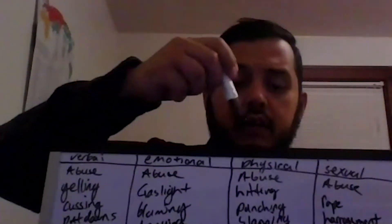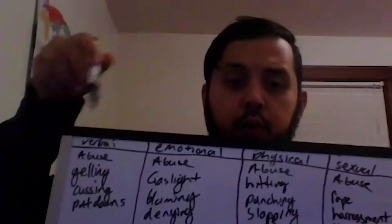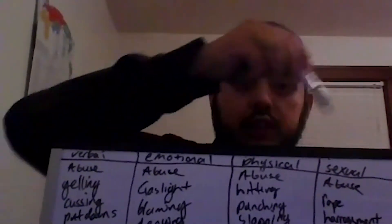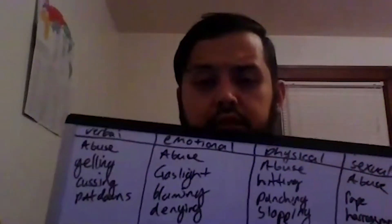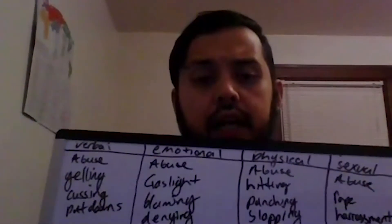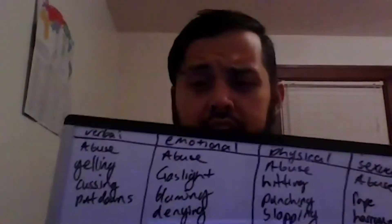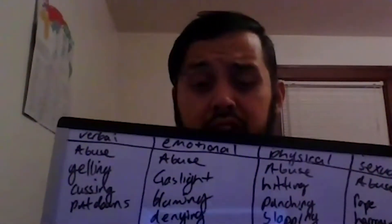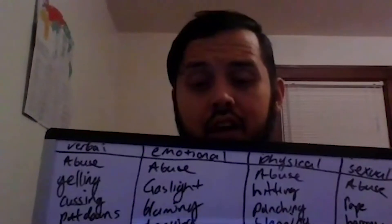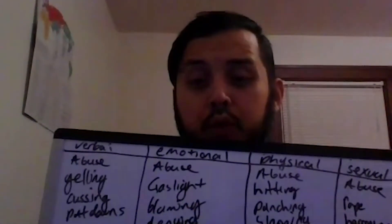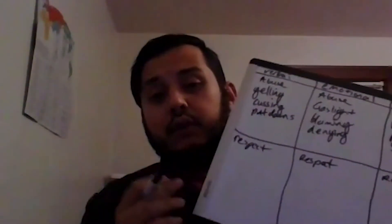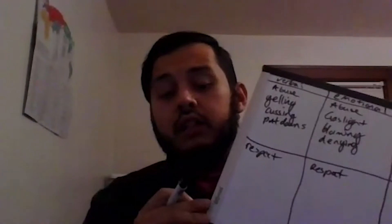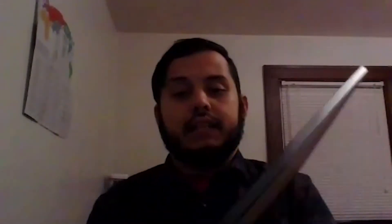Individual groups rotate between verbal, emotional, physical, and sexual, and they'll all start at different points. Early on in these activities, the posters may fill up really quickly. But the more you rotate, it may start to slow down. Then you'll have different groups working on the respect side.